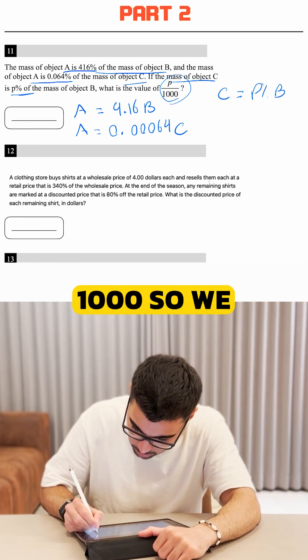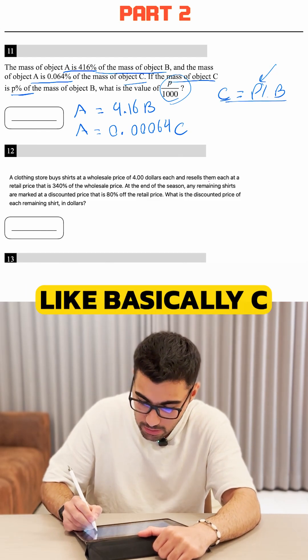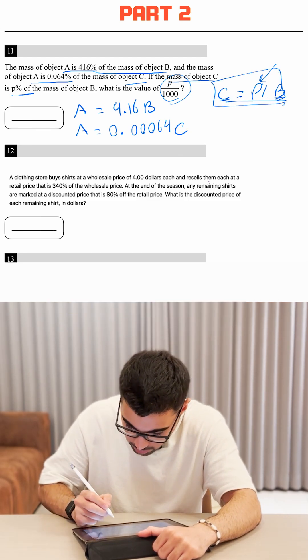What is the value of P over a thousand? So we want to first find P and then P over a thousand. This is what we want to do. So we need to isolate basically C, write an equation in terms of C and B.